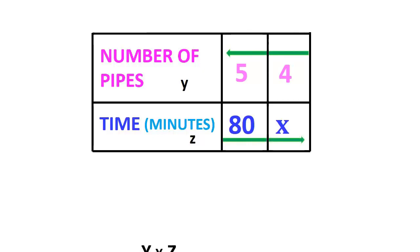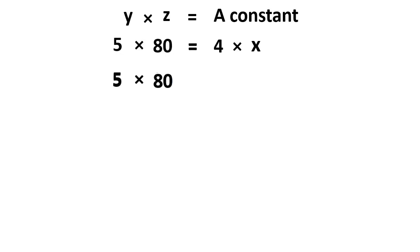Therefore, yz equals a constant. Hence, 5 into 80 equals 4 into x. 5 into 80 divided by 4 equals x. So, x equals 100 minutes.